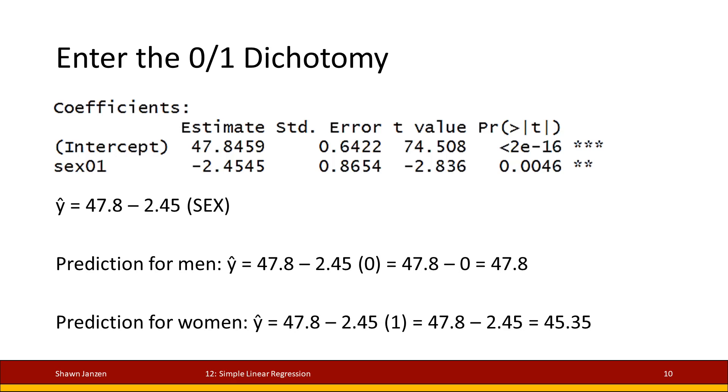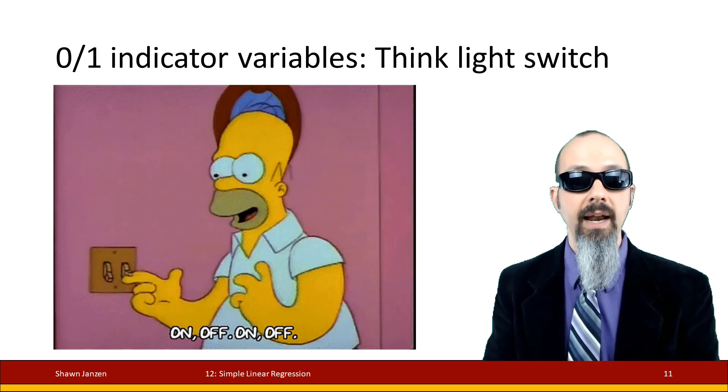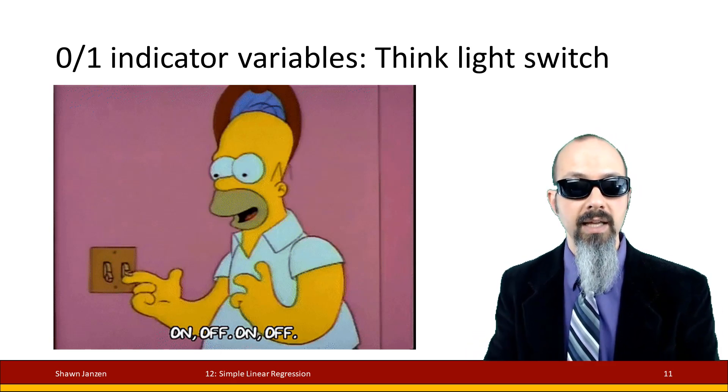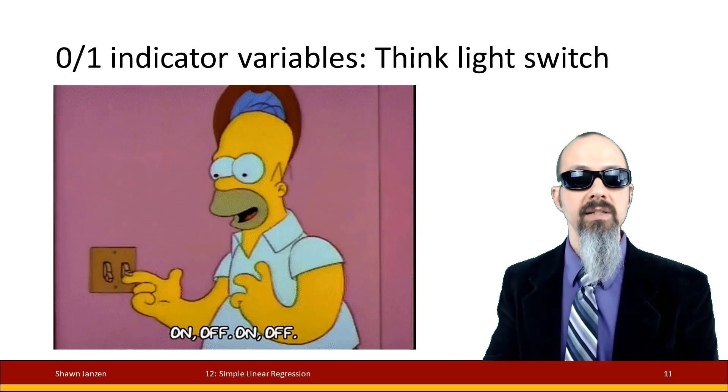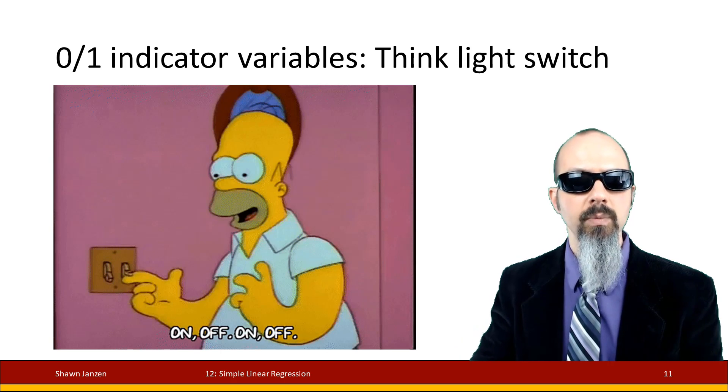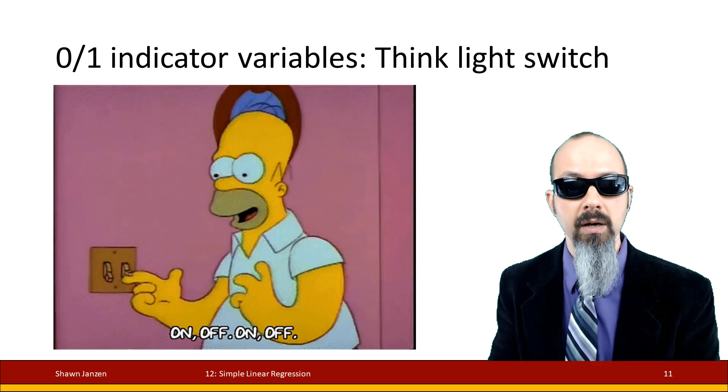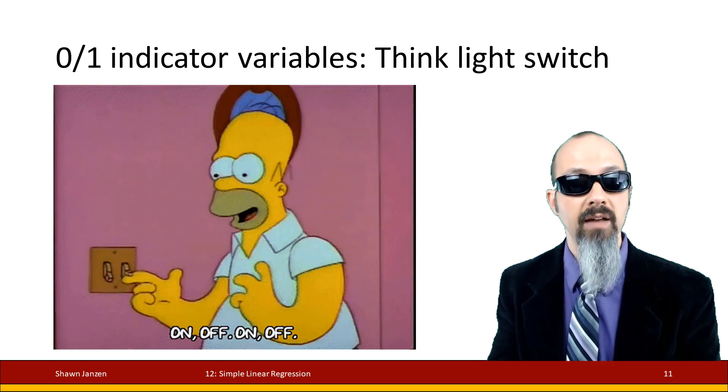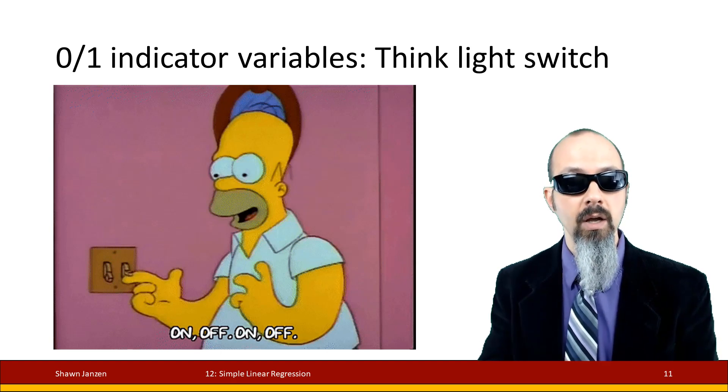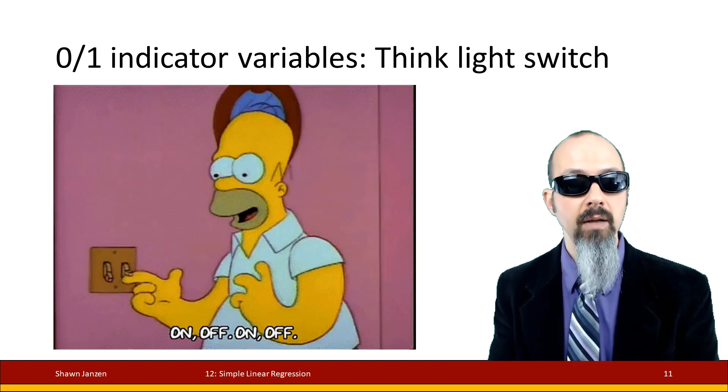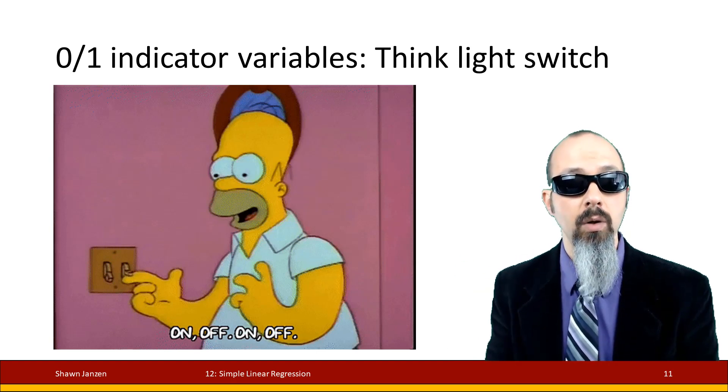The zero-ones are indicator variables and it helps to think of them like a light switch. Think of it as zero is off, one is on. When it's coded at zero, that means you have the zero group. One is that group of interest, that flag group. When the flag group is coded to one, then it gets the coefficient value kicking in, where zero it does not. Just think of it as an up and down light switch - are you a zero or a one, and how that's affecting your coefficient change applied to that one group.